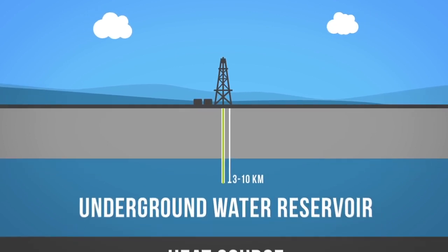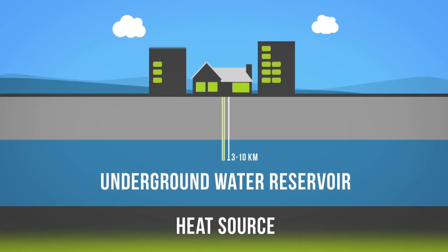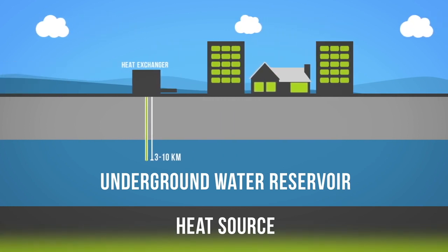Hot water from the Earth may be directly extracted to heat homes and buildings. This is done either by directly circulating the hot water through buildings, or by pumping it through a heat exchanger that transfers the heat to the building.